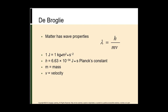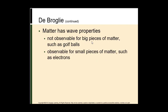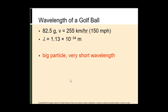Matter has wave properties, but they're not observable for big pieces of matter like golf balls — only for small pieces of matter like electrons. The product of m times v needs to be very small because h is so small. For a golf ball of 82.5 grams moving at 255 kilometers per hour (about 150 miles per hour), the m times v is huge — giving a wavelength of 1.13 times 10 to the negative 34 meters. That value cannot be measured with any instrument and is not meaningful.